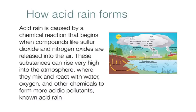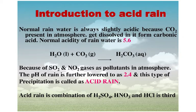How does acid rain form? Acid rain is caused by a chemical reaction that begins when compounds like sulfur dioxide and nitrogen oxides are released into the air — such as when you burn coal or wood. These substances rise high into the atmosphere where they mix and react with water, oxygen, and other chemicals to form acidic pollutants. Normal rainwater is always slightly acidic because CO₂ in the atmosphere dissolves in it, forming carbonic acid (H₂CO₃).